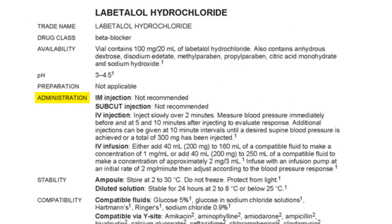'Administration' lists all the ways the injection can be given, as well as instructions on how to make the infusion. The headings are IM injection (intramuscular), subcut injection (an injection under the skin, either intermittent or continuous subcutaneous infusion), and IV injection (directly into a vein). For labetalol hydrochloride, both IM and subcut injection are not recommended.